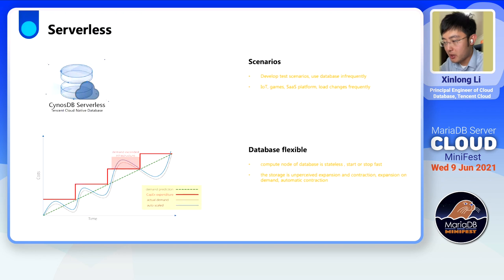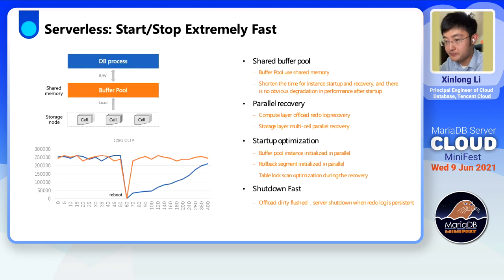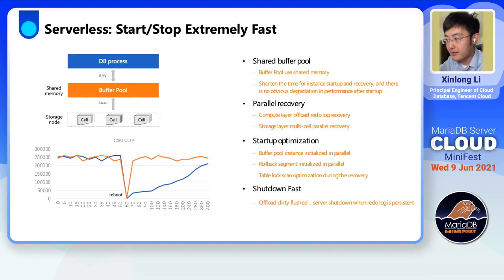The compute node of the database is stateless, and can start and stop fast without processes like redo log recovery. The storage supports unperceived expansion and contraction — expansion on demand and automatic contraction. The compute node can start and stop extremely fast to adjust computing resources dynamically. Shared memory is used for the buffer pool, which shortens the time for instance startup and recovery, and there is no obvious performance degradation after startup.